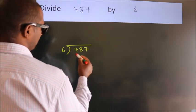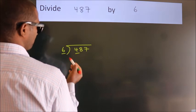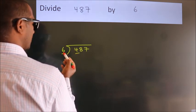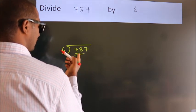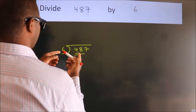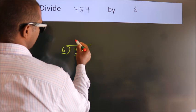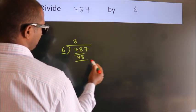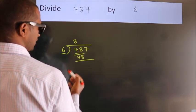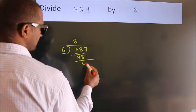Here we have 4. Here 6. 4 smaller than 6. So we should take two numbers. 48. When do we get 48? In 6 table. 6 8's 48. Now we should subtract. We get 0.